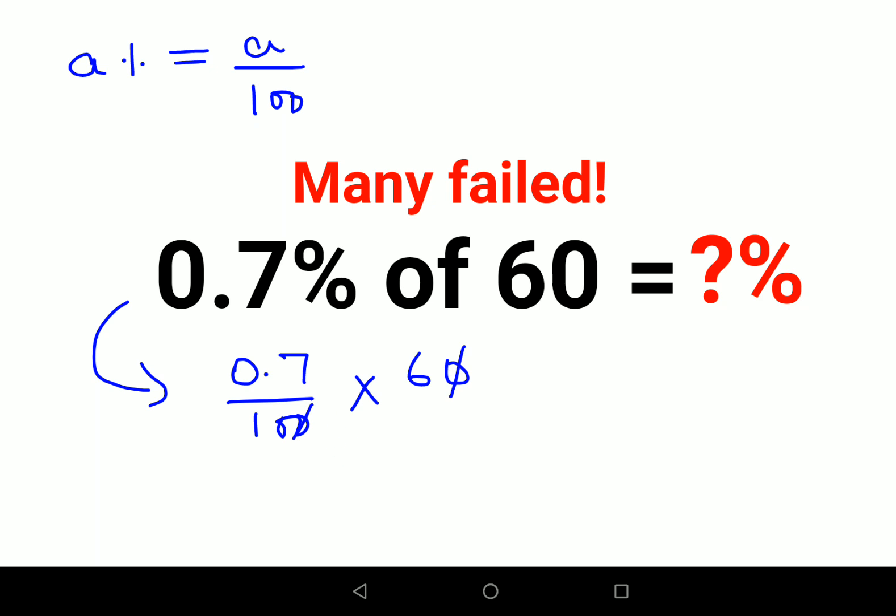Now this and this gets cancelled. Very important thing, you can directly multiply 0.7 into 6 that gets you 4.2 upon 10. Now I have continued to write 10 because here my answer needs to be in terms of percentage.